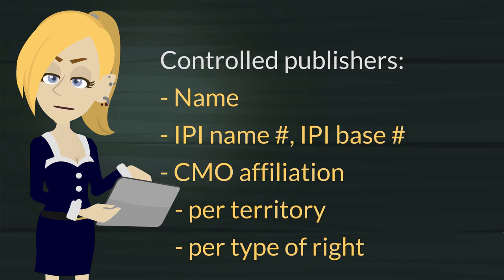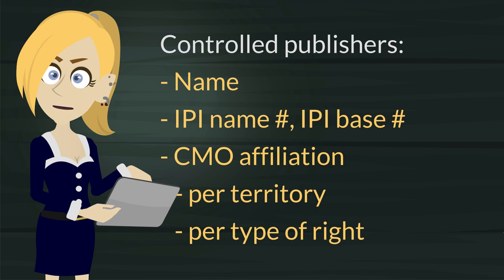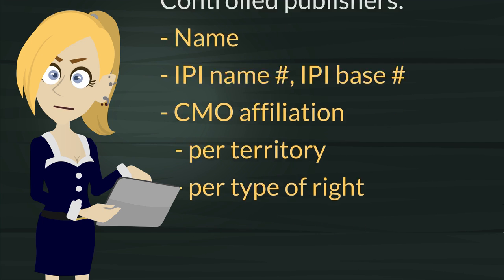What does detail mean? For controlled publishers it means name, IPI name and base numbers, and society affiliations per territory, per type of right — not counting all the data from agreements, of course.